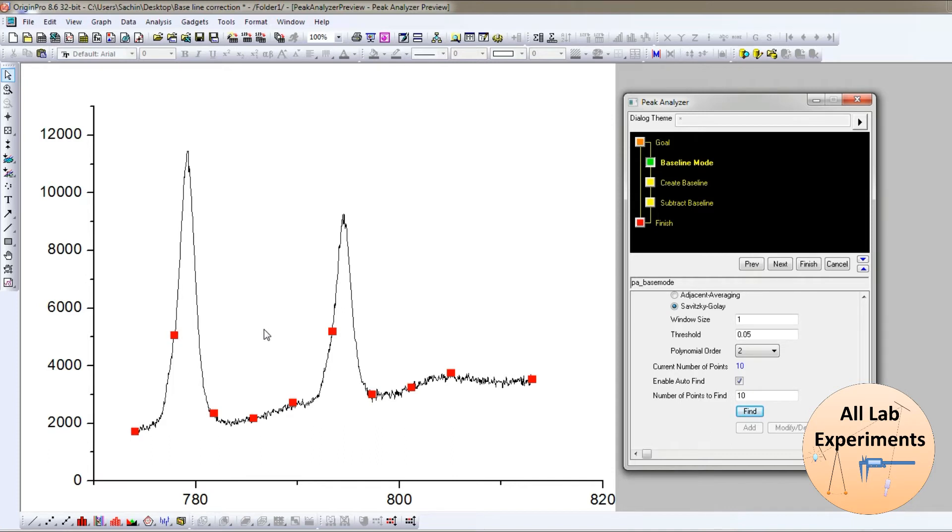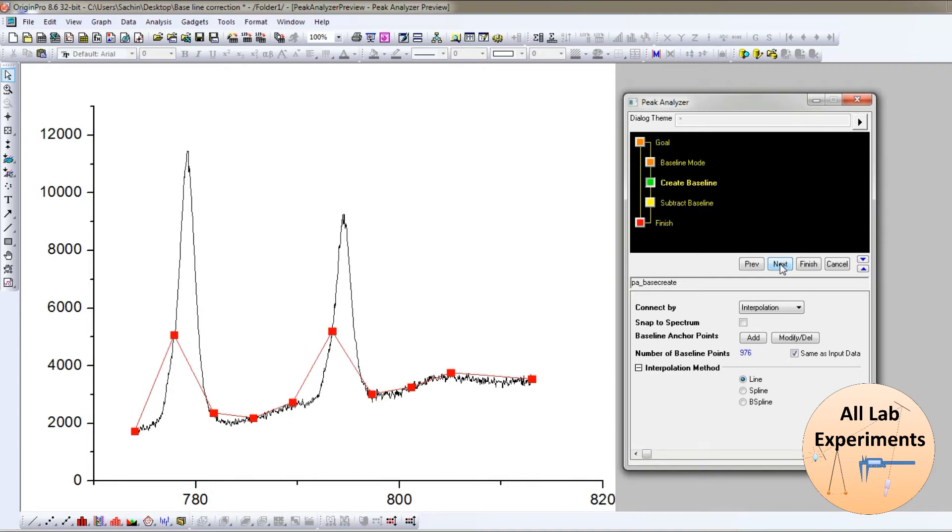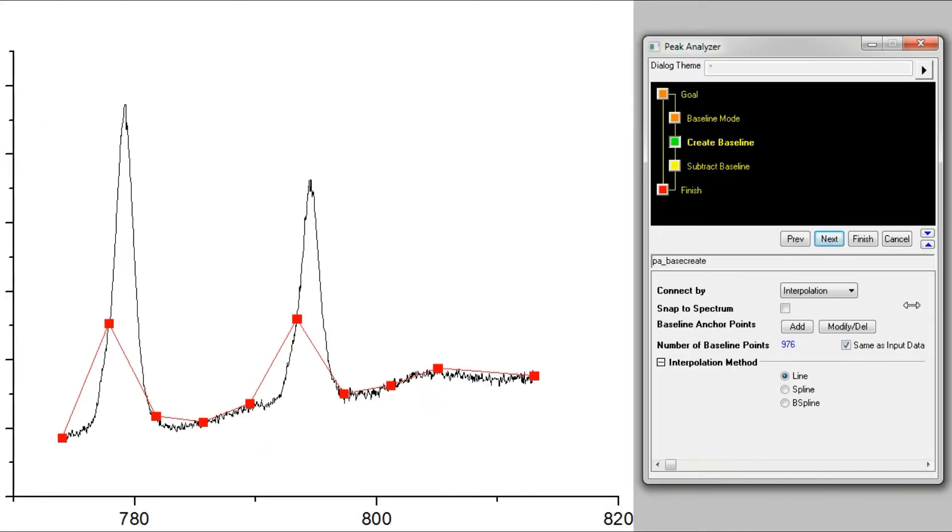Now in this option, first we have interpolation. What kind of interpolation between these points do you want? For this application, please choose this spline option and you will see that the linear portion has been changed to these splines. But still it is not fitting our baseline.